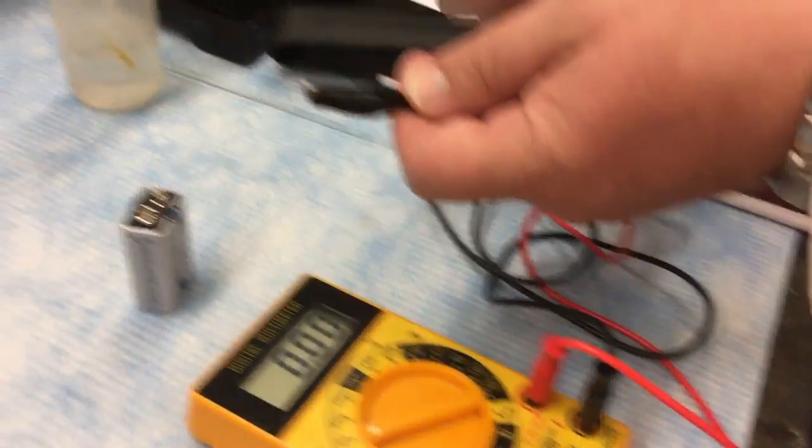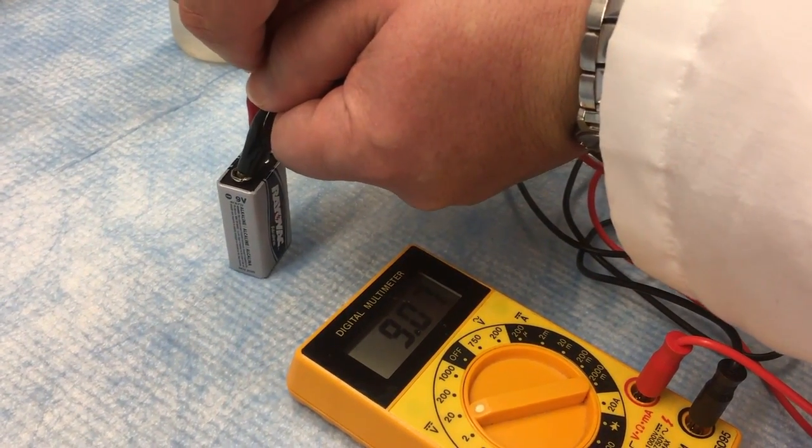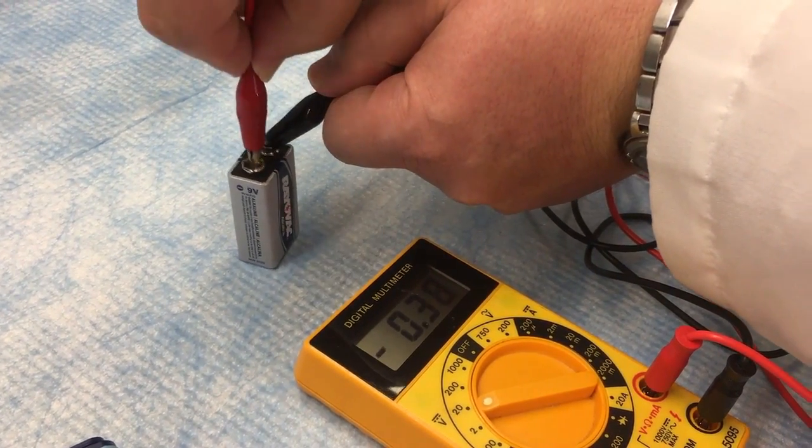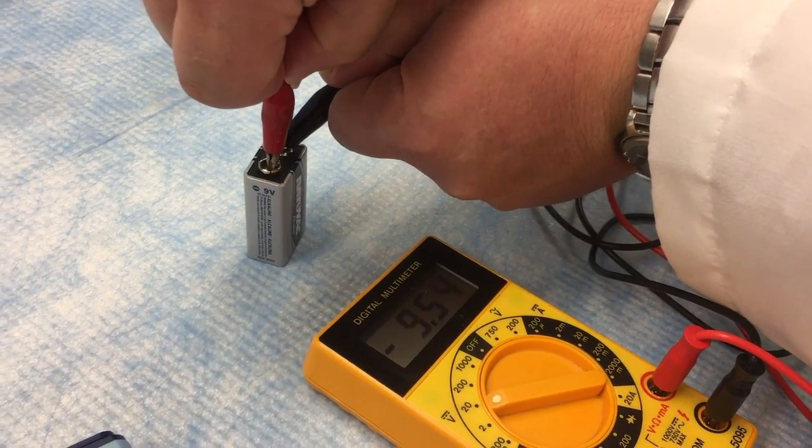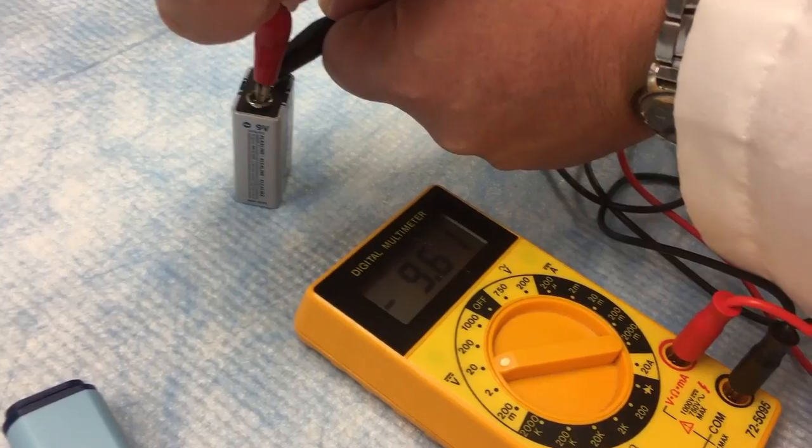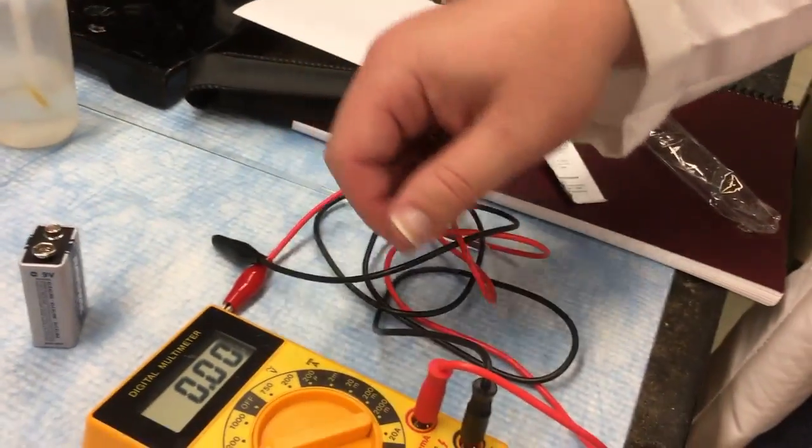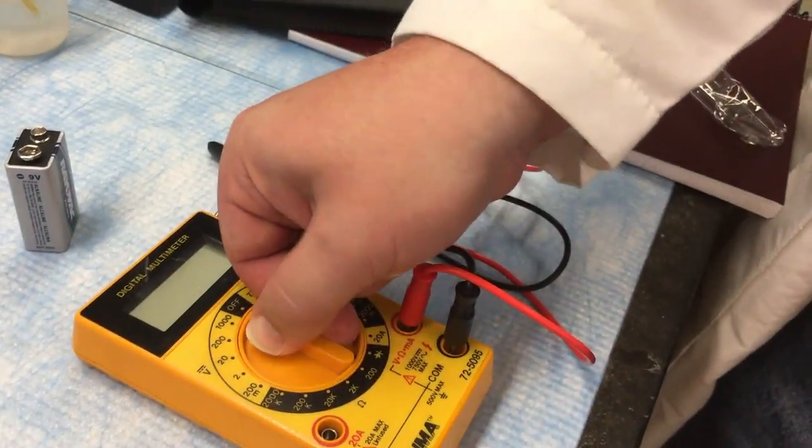Now one thing I'm going to point out to you here is if you swap the leads, you put them on opposite sides now, the sign changes. It goes from being positive 9 point whatever to about negative 9 point whatever. The sign doesn't matter much for this lab. Just be aware that voltage does have a sign with it as well as having a magnitude. When you're done just switch this back to the off position and that's it.